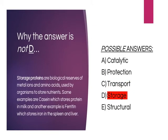Option D: Immunoglobulin would be classified as a protection protein, not a storage protein. Storage proteins are biological reserves of metal ions and amino acids used by organisms to store nutrients. Some examples are casein, which stores protein in milk, and ferritin, which stores iron in the spleen and the liver.